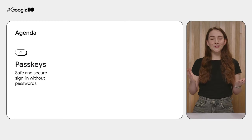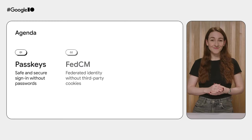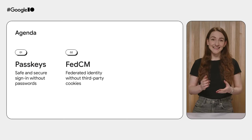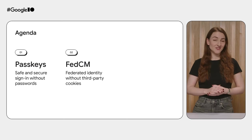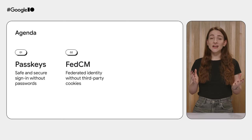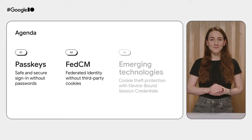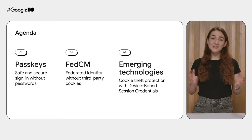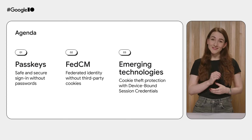We'll go over the state of support and how to go about implementing passkeys on your sites. Next, we'll talk about Federated Credential Management API, or FedCM, a new privacy-focused web technology that allows users to easily sign up and sign in to websites using their existing accounts from trusted providers such as Google. FedCM doesn't rely on third-party cookies, which is especially important as Chrome plans to phase out third-party cookies and has restricted them for 1% of users since January 4th, 2024. FedCM is evolving and will cover new features like the Multi-Identity Provider API. And finally, I'll tell you about exciting new technology — device-bound session credentials — that tackle session hijacking to better protect your online accounts.